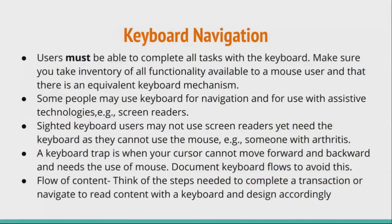The most important thing for accessibility is keyboard navigation. Every piece of content you create has to be accessible with a keyboard, and users must be able to complete all tasks with the keyboard — this is a must. Some people use the keyboard with assistive technologies like screen readers, but some people need the keyboard simply because they cannot use a mouse, for example someone with arthritis. A keyboard trap occurs when your cursor cannot move forward and backward without using the mouse, so test your content for keyboard traps and document keyboard flows.